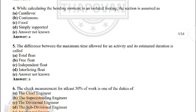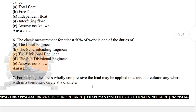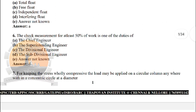Next: the difference between the maximum time allowed for an activity and its estimated duration is called — the correct answer is option A: total float. Next: check measurement for at least 50 percentage of work is one of the duties of — the correct answer is option D: the subdivision engineer.